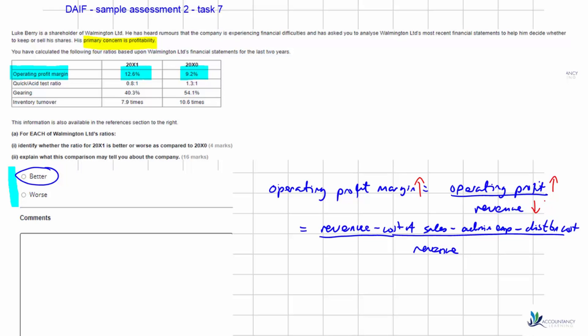If the numerator has increased, that could be because revenue has gone up — perhaps we have increased our selling prices. Or it could be that we have reduced our costs in some way: our cost of sales may have gone down because we've negotiated cheaper purchase prices for materials, or we've managed to reduce overhead costs, or found alternative distribution routes. By breaking down operating profit into its component parts, we can say something about each of them and potentially earn a mark for each.